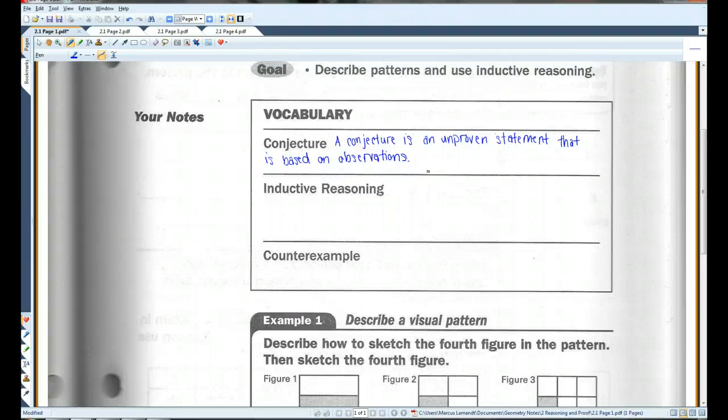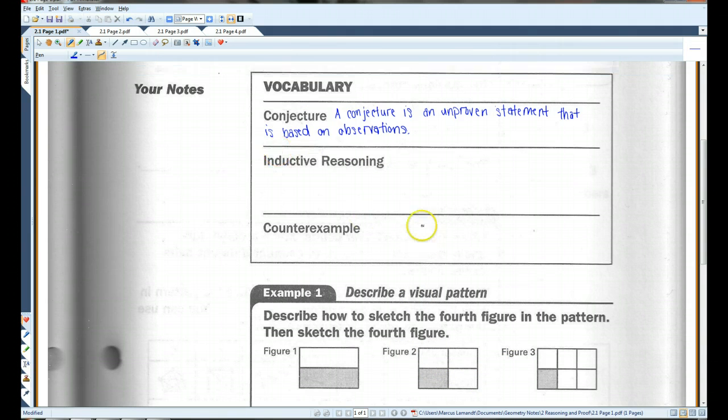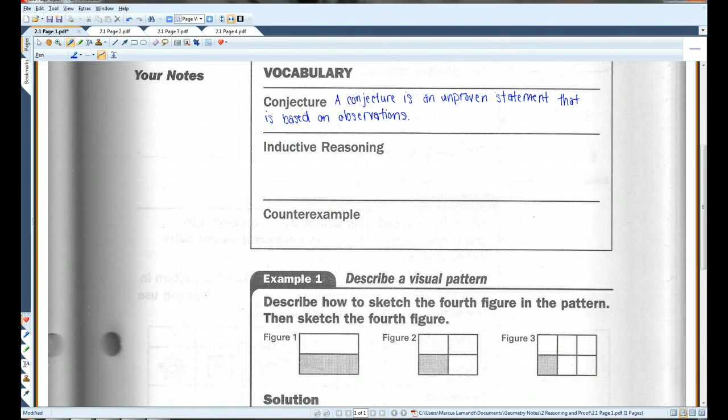Inductive reasoning is the process of finding a pattern for specific cases and then writing a conjecture for it. We'll do an example down here. When you are given a problem in which you look for a pattern and then you make an educated guess based on that pattern, you're using inductive reasoning. I'll show you what we mean when we get to example one.